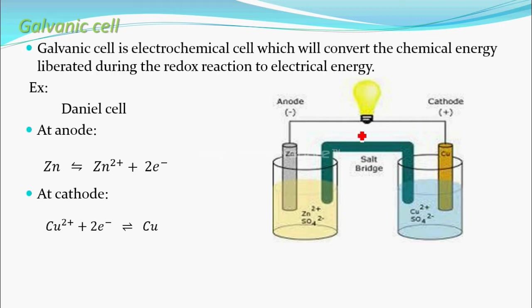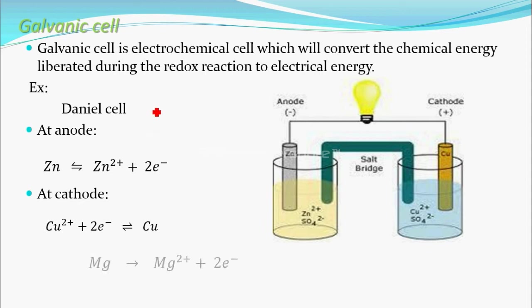A galvanic cell is an electrochemical cell that converts chemical energy from a redox reaction into electrical energy. The combination of zinc and copper is what makes this a Daniel cell, named after the scientist Daniel who first constructed this galvanic cell using zinc and copper. You can also construct galvanic cells using other combinations, such as magnesium as the anode and silver as the cathode.